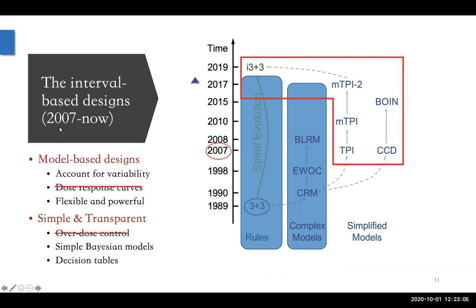These efforts started in 2007. Except for the I3+3, all the other designs — the TPI, MTPI, CCD, and BOIN — I still call them model-based designs. I know there's a term 'model-assisted design' in the field, but to me, if we use a parametric model like beta-binomial models and the inference is based on the model, then that's a model-based design. There's another type which is model-free or rule-based. These models still account for variabilities through the probability distributions. However, they are flexible and perform well when we account for ethical constraints.